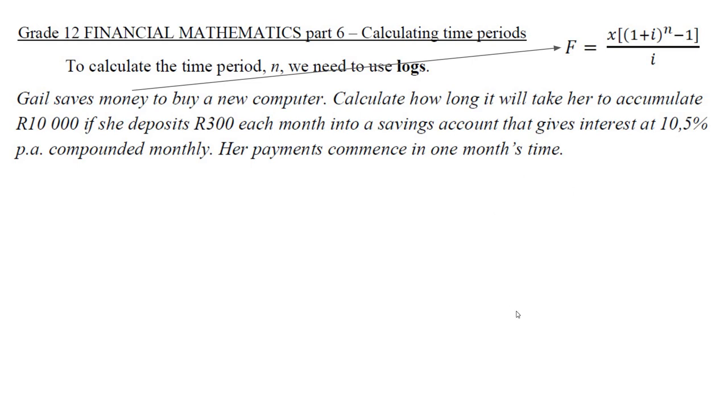So there's the future value formula that we're going to need, and all we do is put 300 in for x, 10,000 in for f, and 0.105 over 12 in for i. That might be with one or two marks, just putting in all the right stuff.